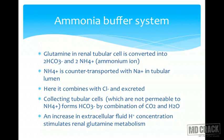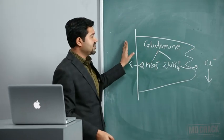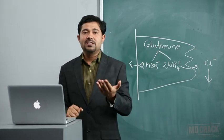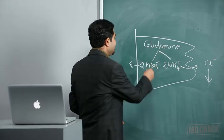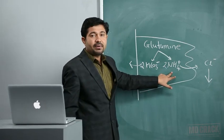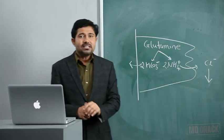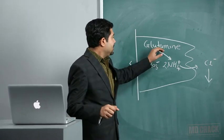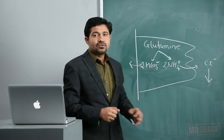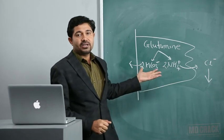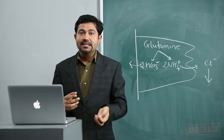The most important buffer in the tubular lumen is the ammonia buffer system, consisting of glutamine. Glutamine can be converted into two HCO3- ions and ammonium ion (NH4+). When the body needs to excrete excess H+, glutamine synthesis by tubular cells increases. Glutamine is converted into two bicarbonate ions and NH4+, which diffuses into the lumen and is excreted. Importantly, buffering of H+ in the renal tubule via this system simultaneously generates new bicarbonate ions.